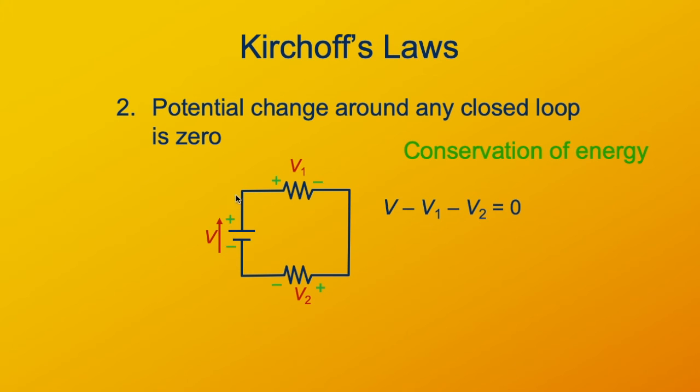Here the voltage is going up, down, down. So we'd say V minus V1 minus V2 equals zero. So going around the loop, the voltage change is zero.